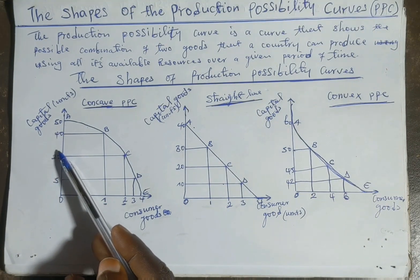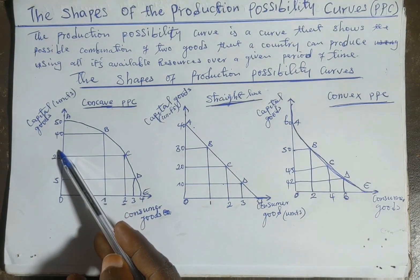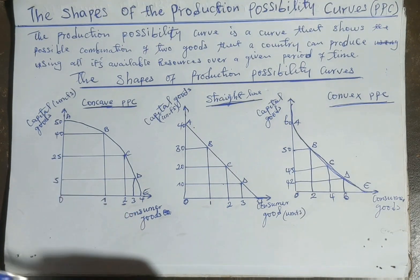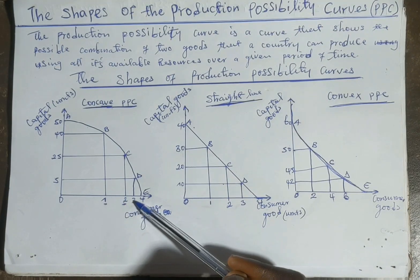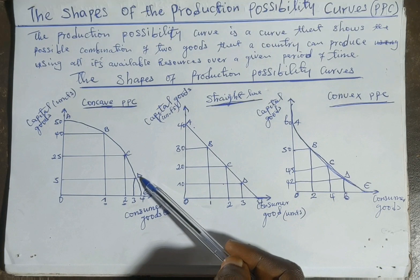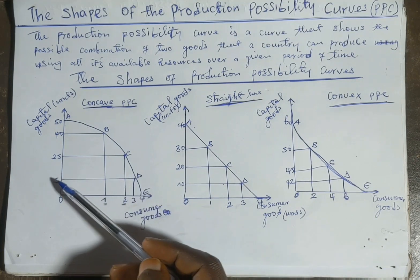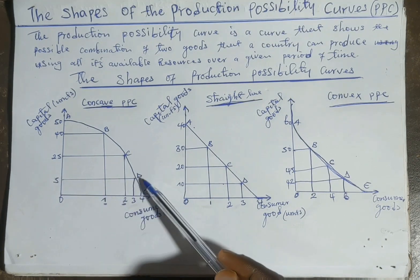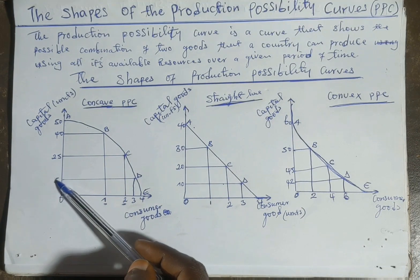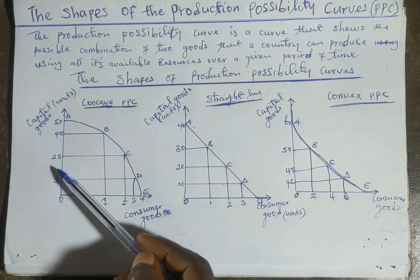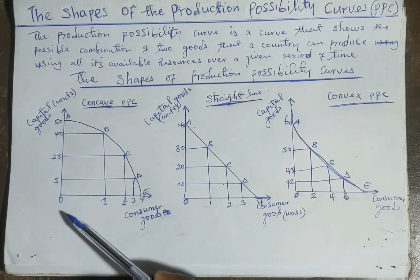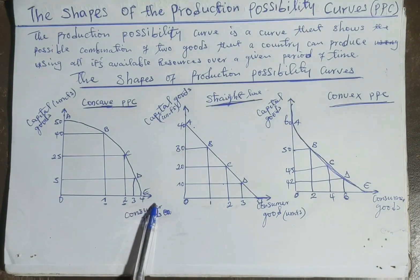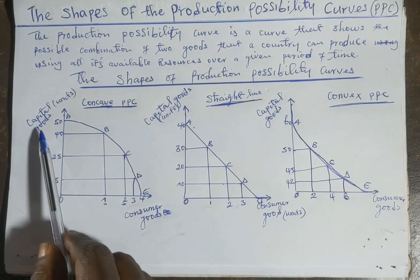We can see there is an increased opportunity cost. The country then produces another unit of consumer goods at combination D, where it produces 5 units of capital goods and the opportunity cost has increased to 20. More resources are reallocated to the production of consumer goods and more sacrifices are made for capital goods.